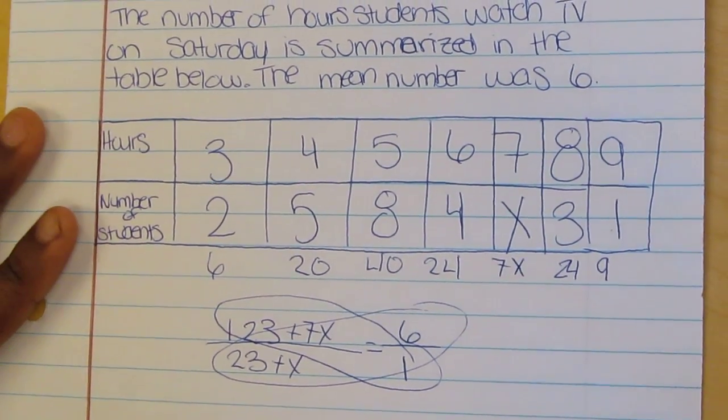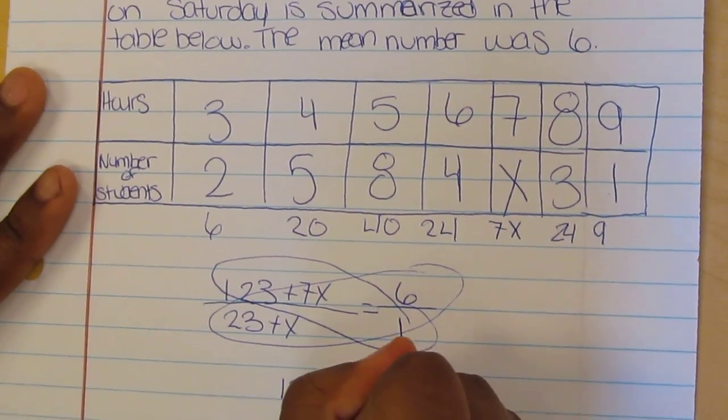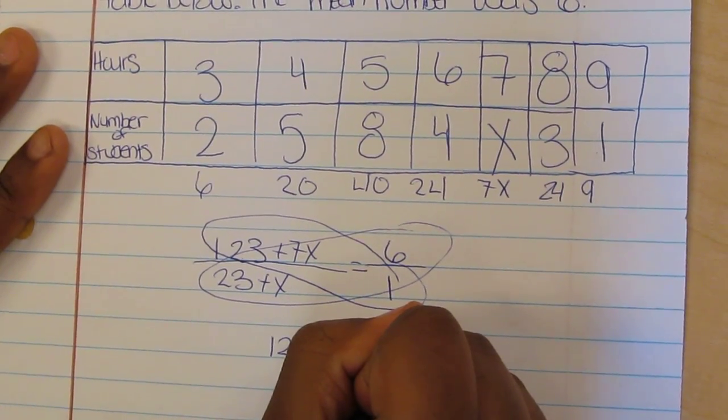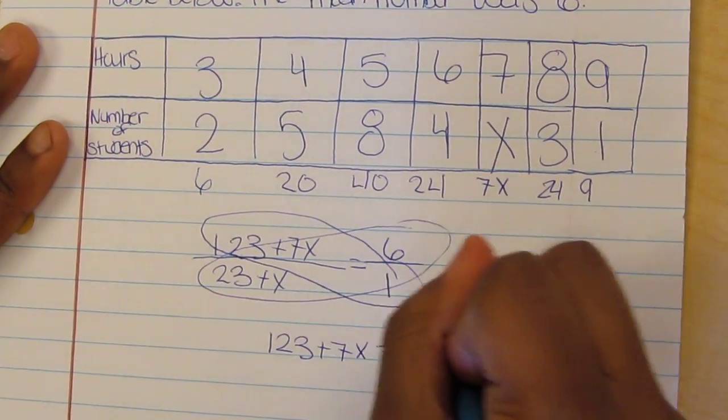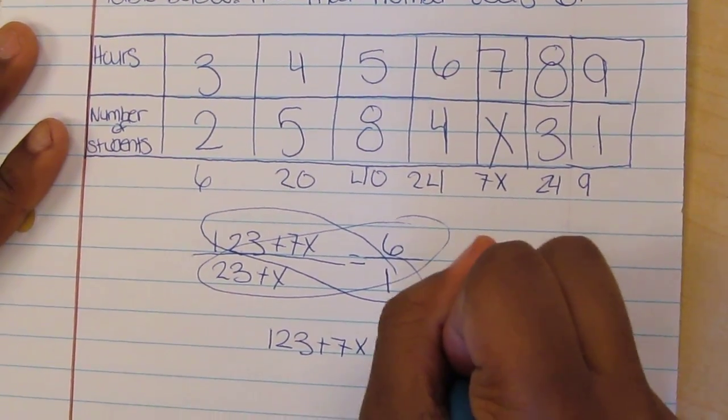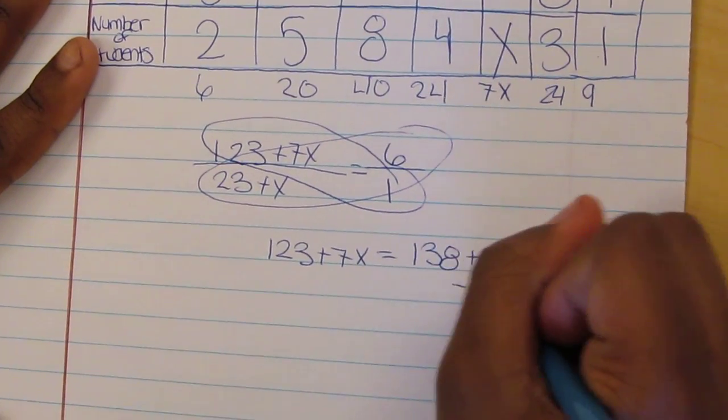You get 123 plus 7X equals 138 plus 6X. Then you subtract 6X from both sides.